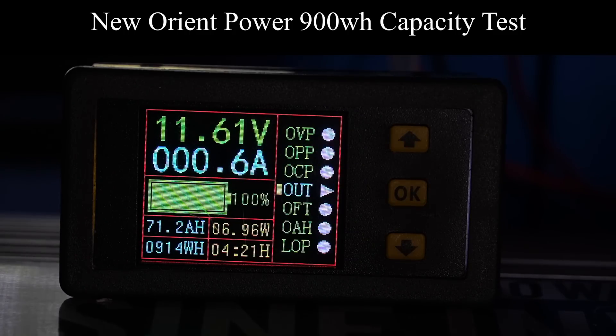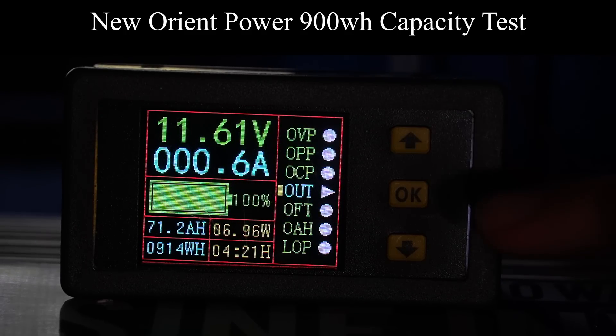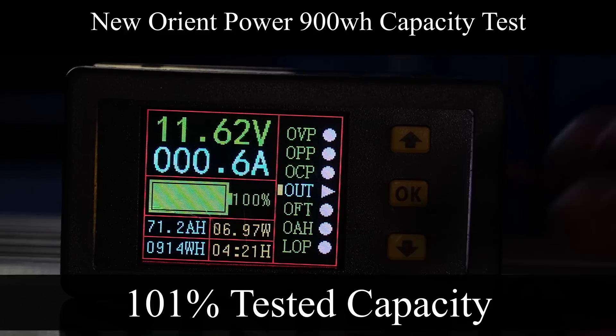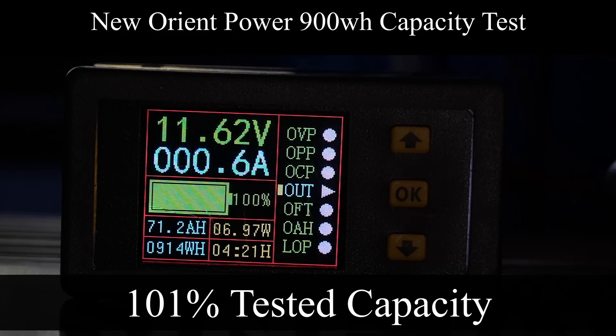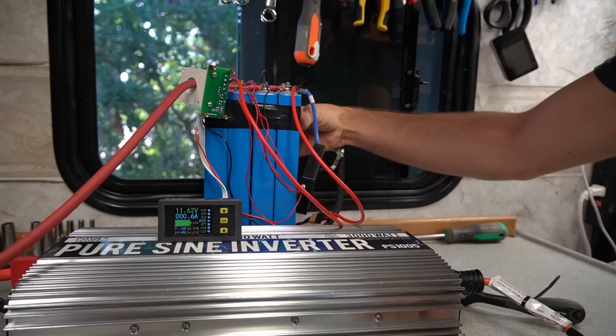Oh my. Oh look at that. We were supposed to hit 900 watt hours for 12 volt nominal and it did 914. So it's not as good as the Xenopoly but it did 100% of the rated capacity.